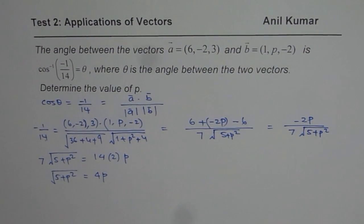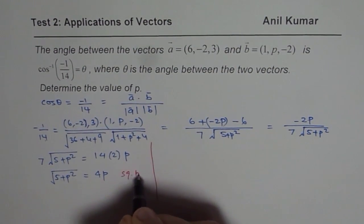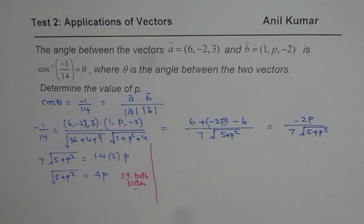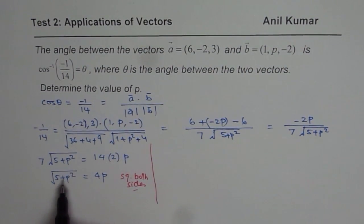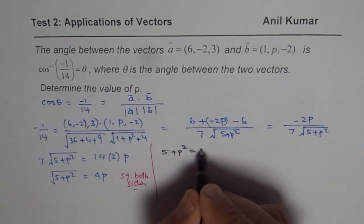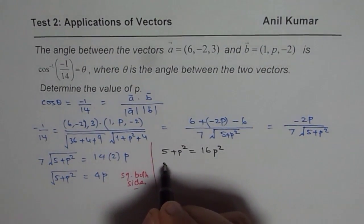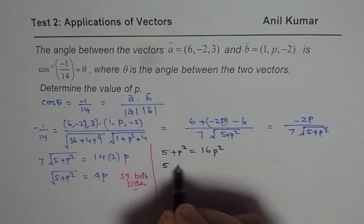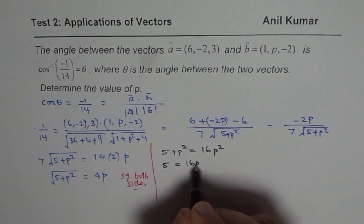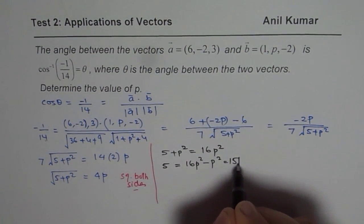Now to solve this, we can square both sides. So when you square both sides, you get 5 plus p squared equals to 16p squared. Now we can take this on the other side. So you get 5 equals to 16p squared minus p squared, which is 15p squared.